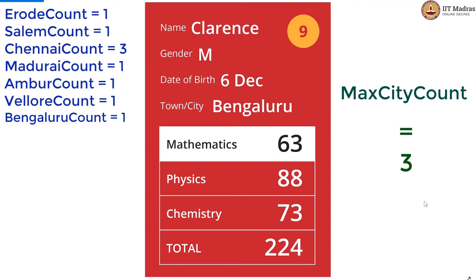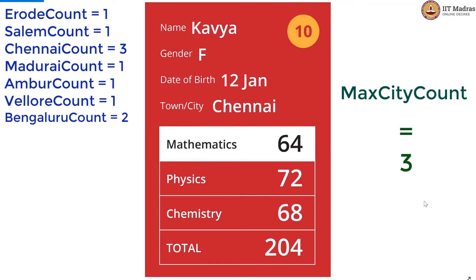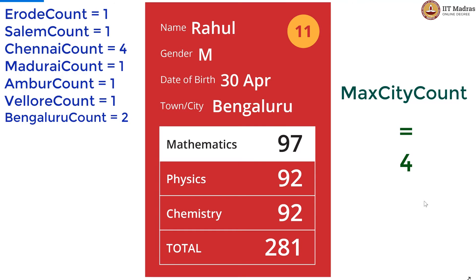One more Bengaluru, so Bengaluru count will now increase by 1, giving us Bengaluru count at 2. One more Chennai now, so this makes Chennai count 4. And that would imply max city count has to change because 4 is greater than 3, so max city count has to be updated to 4. Bengaluru again, so this time we are at 3 Bengaluru, but no change in max city count.